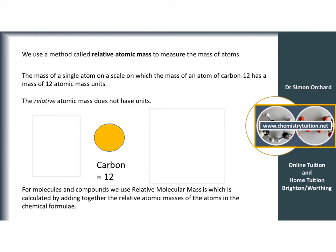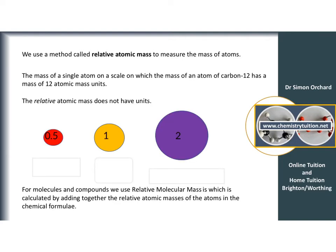Chemists all agreed that an atom of carbon-12 would have a mass of 12, and everything else is compared against that. Going back to our original atoms: if the orange atom now has a mass of 12 — making it a carbon-12 atom — then the red atom, being half the mass, would be 6, and the purple atom, being double, would be 24. This makes life as chemists much easier because we can use these relative masses to work out how much we need.